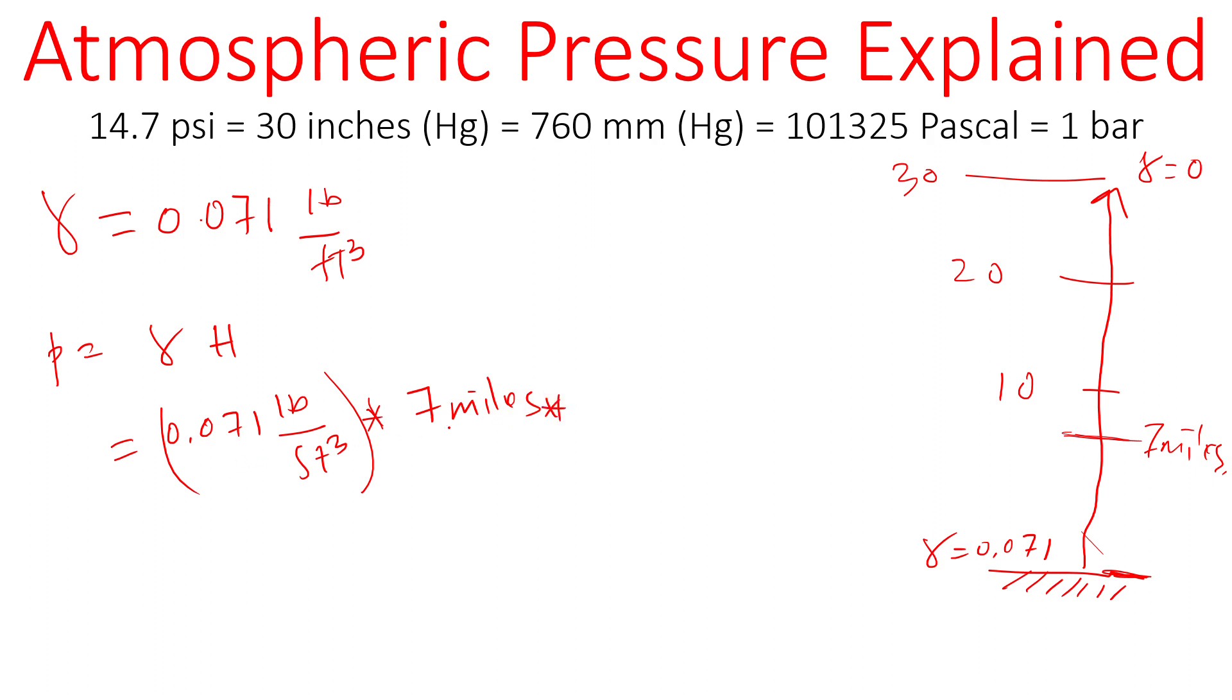And we're assuming the same density even though it's not, but we're just trying to get the idea of where the atmospheric pressure is actually coming from. Now we have to convert that mile, so one mile is 1760 yards, and then I know another conversion - one yard is three feet. So seven miles in feet - I calculated the pressure.